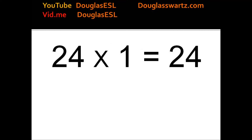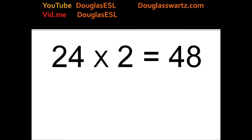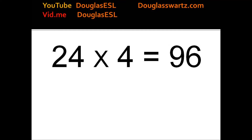24 times 1 equals 24. 24 times 2 equals 48. 24 times 3 equals 72. 24 times 4 equals 96.